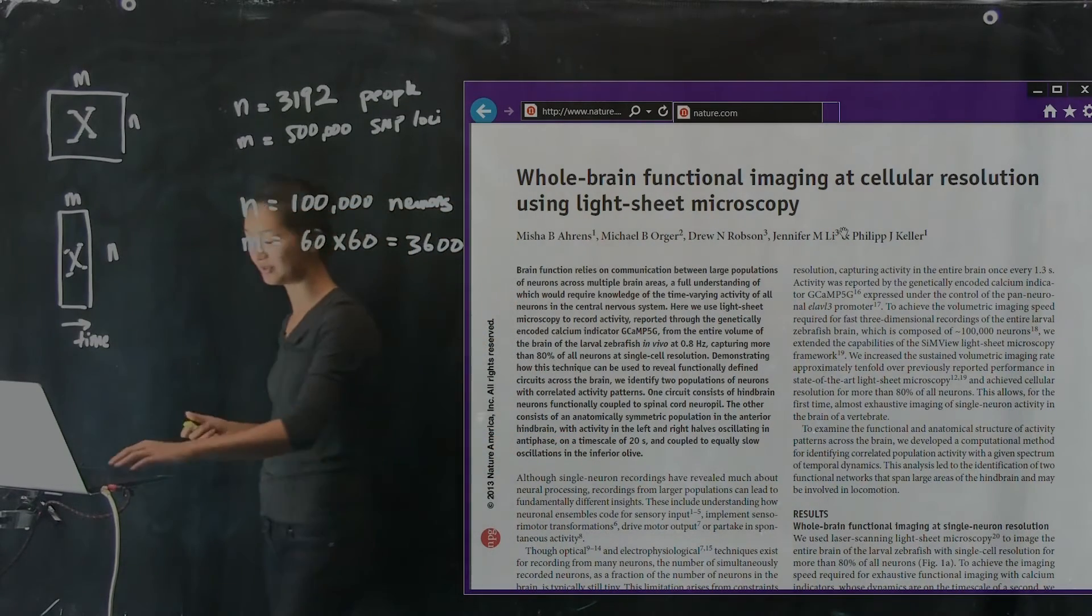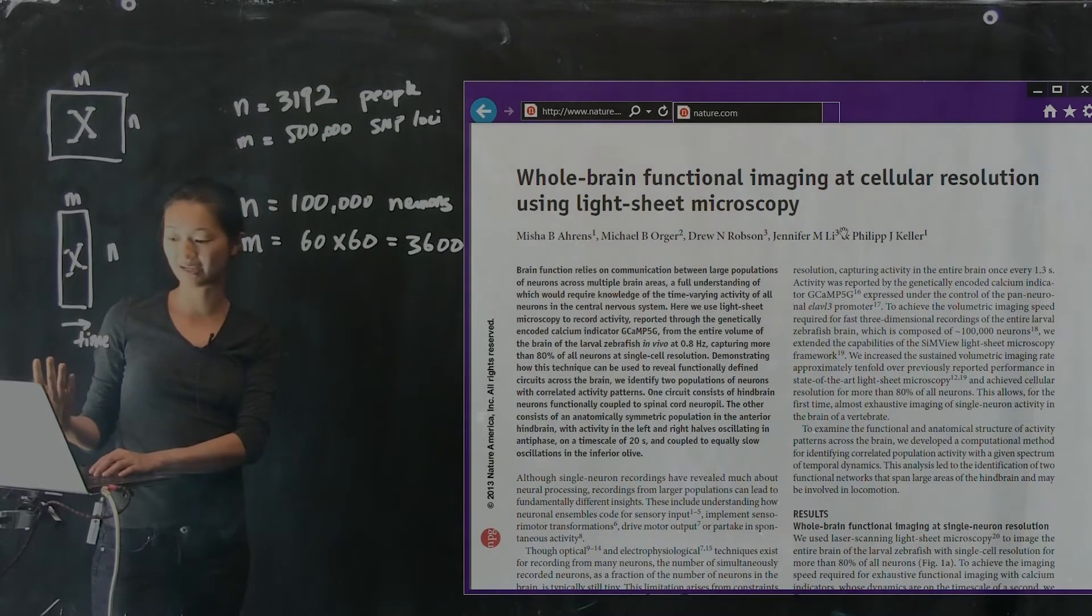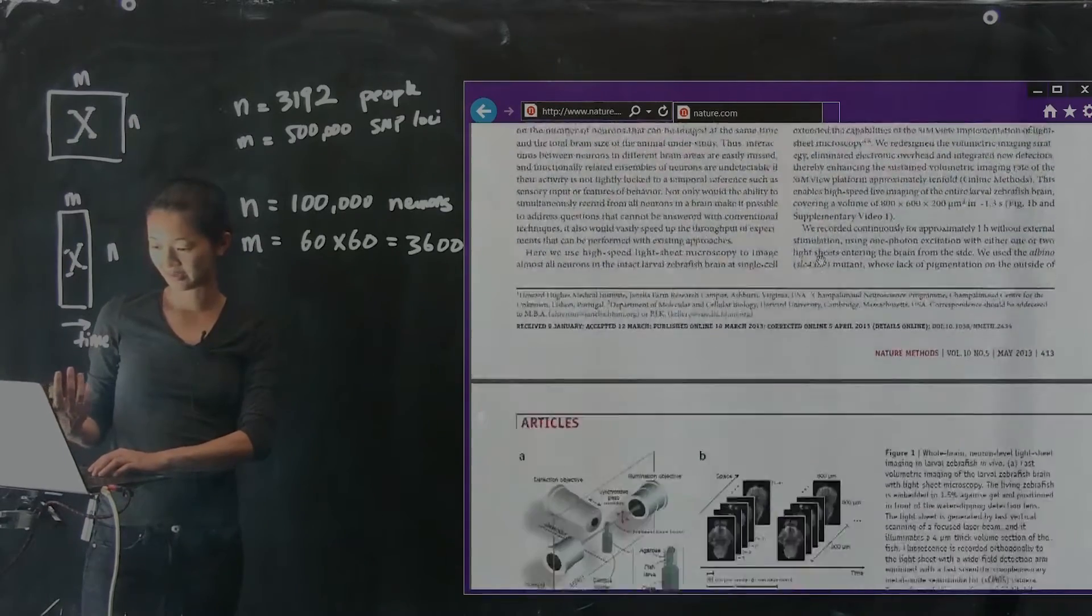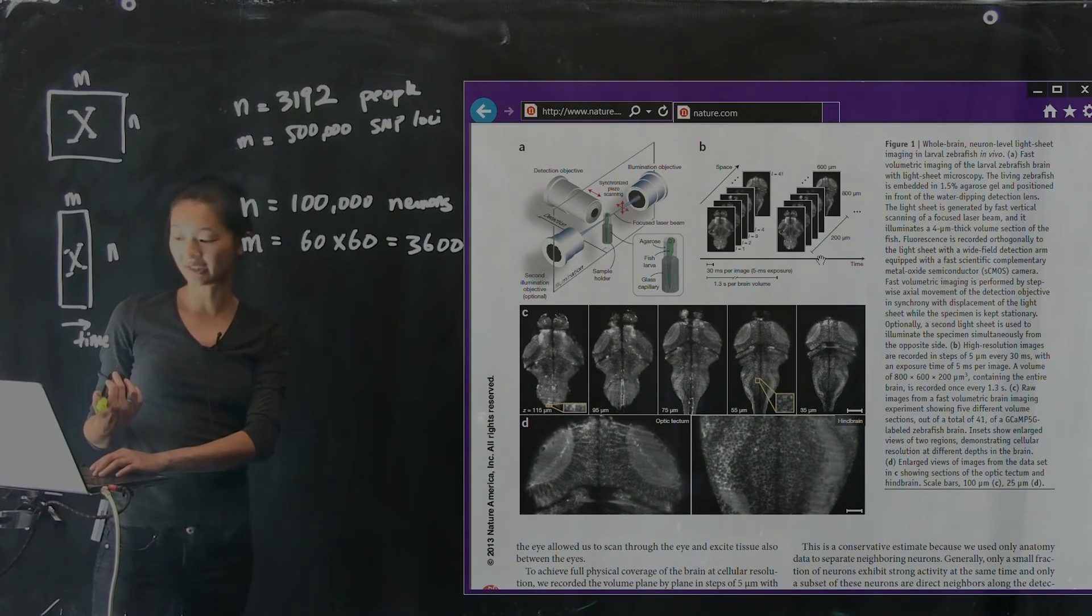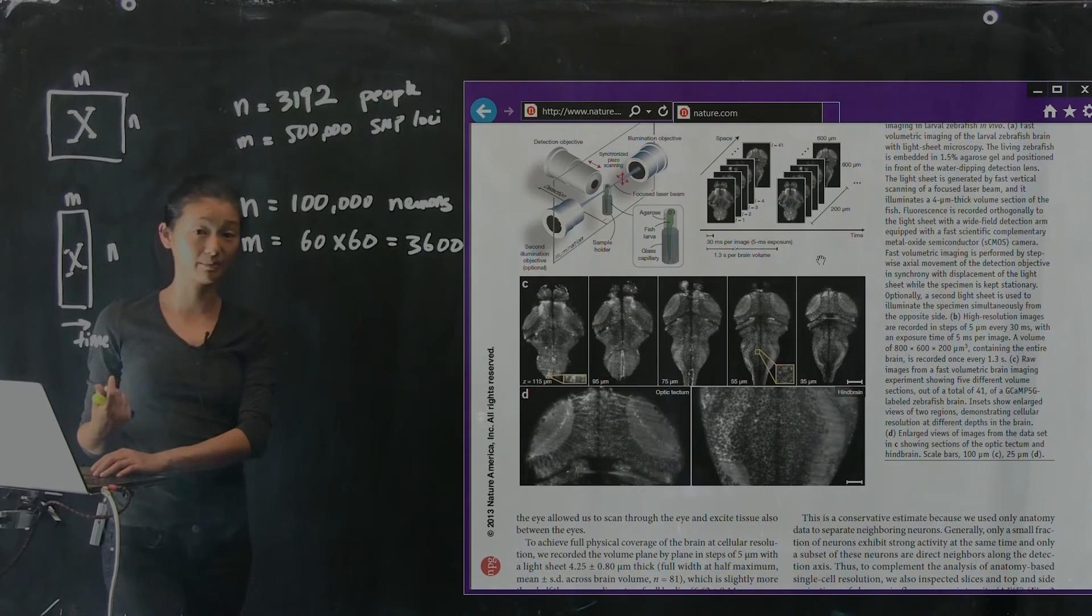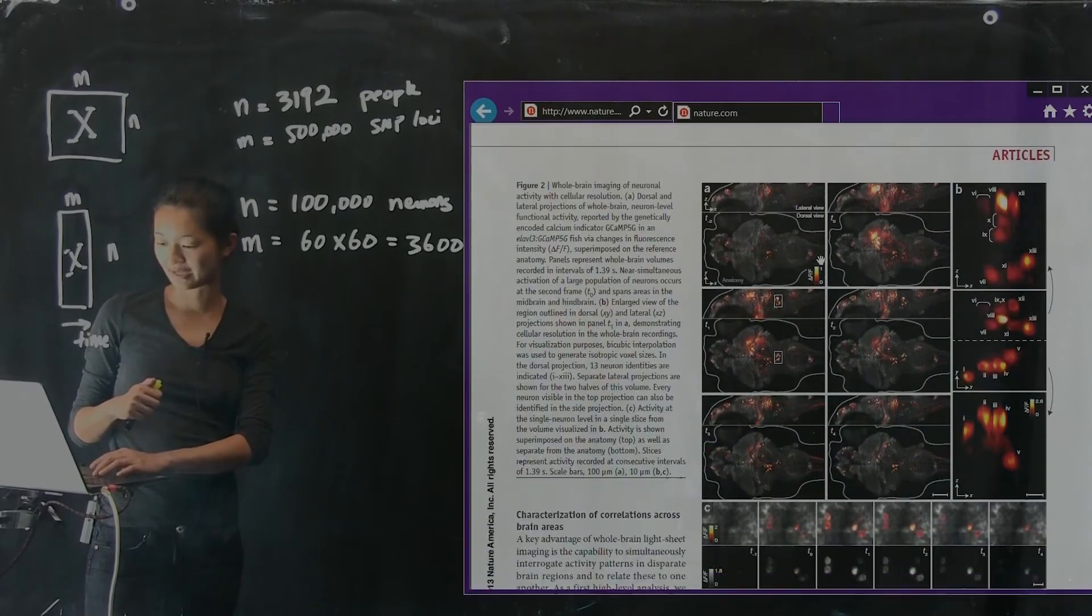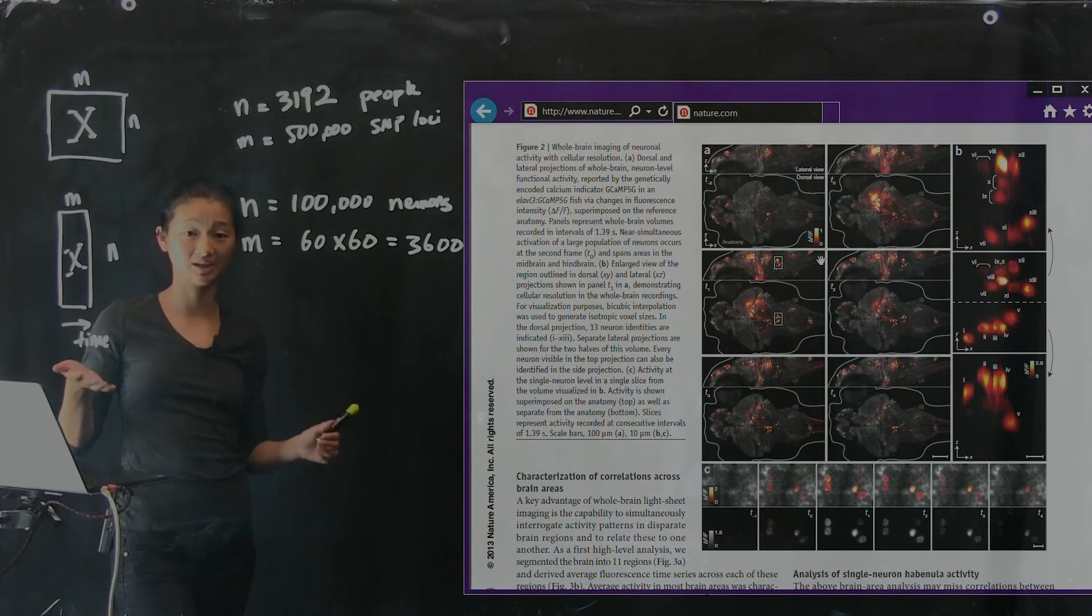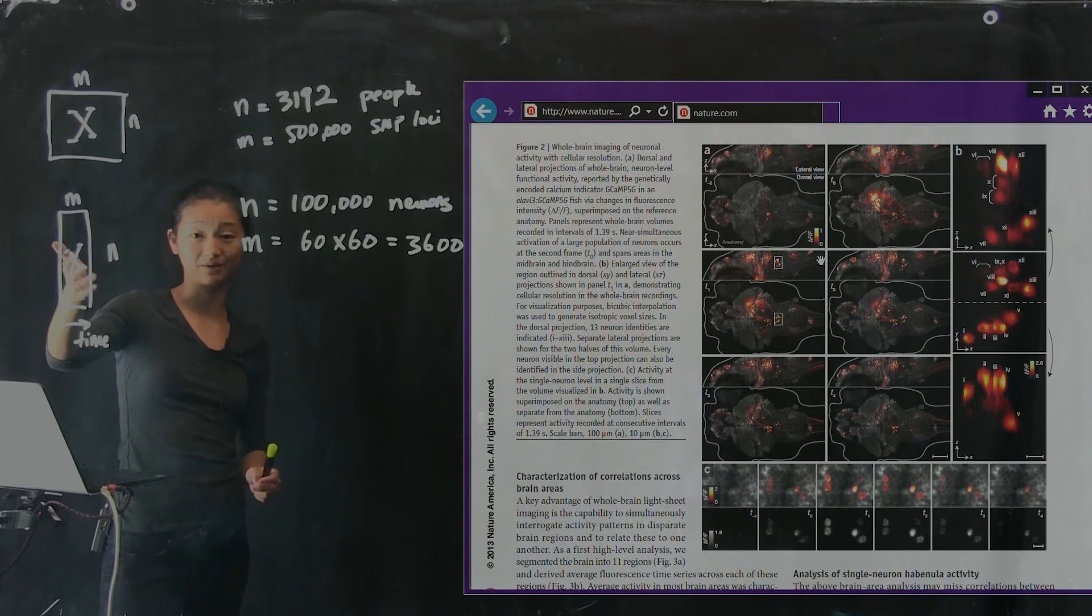And so what they were able to do, because in this case the data intrinsically varies in time, they can visualize it as a movie. And here's a schematic of the kind of data they're collecting, and the kind of resolution they're able to get to zoom into every single neuron. So pretty big technical feat.